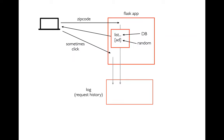Let's talk about how the whole picture is going to work. There's a user in their web browser who types in their zip code, and we send that to a Flask application I've already written but will improve. Within that Flask application, we generate a page listing some grocery stores with an ad at the end. You can imagine pulling the listing from a database, but I've just hard-coded some things as an example. Initially, I'm just randomly generating these ads and sending back this page.